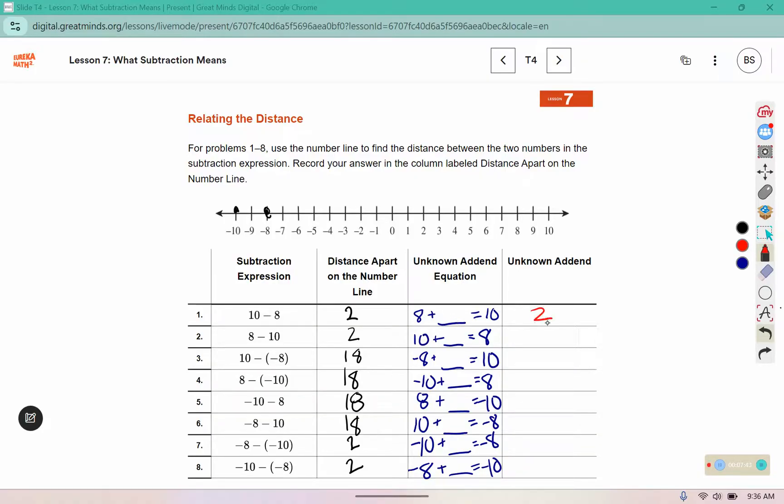8 plus 2 is 10. 10 plus negative 2 is 8. Negative 8 plus 18 is 10. Negative 10 plus 18 is 8. 8 plus negative 18 would put us at negative 10. 10 plus negative 18 would put us at negative 8. Negative 10 plus 2 would put us at negative 8, and negative 8 plus negative 2 would get us to negative 10.